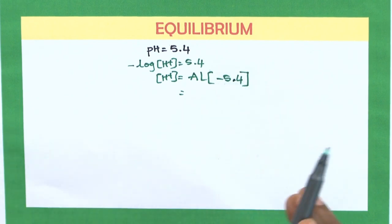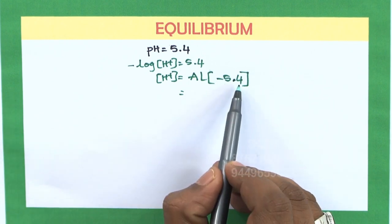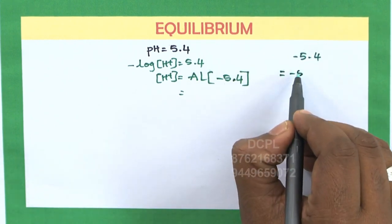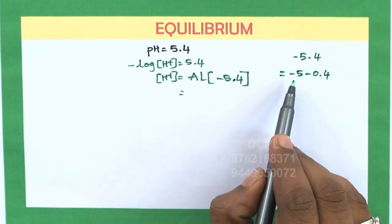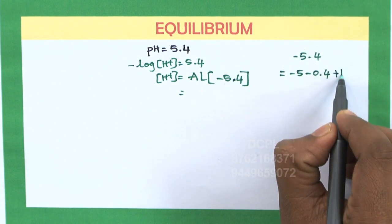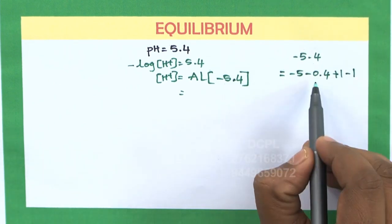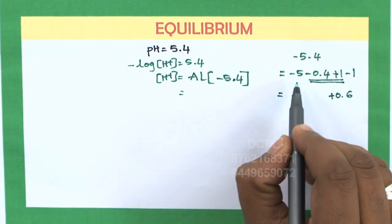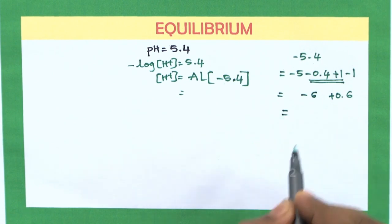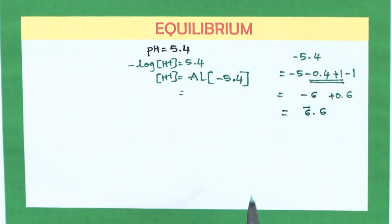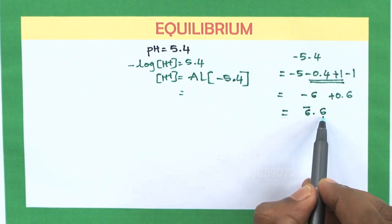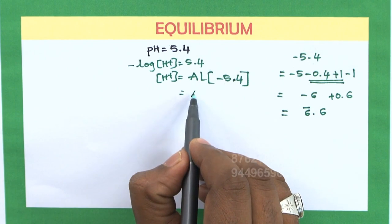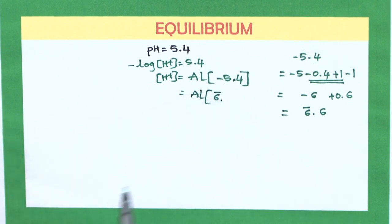The mantissa is the part present after the decimal point. To convert, rewrite −5.4 as −5 − 0.4. Adding and subtracting 1 gives: −5 − 0.4 + 1 − 1 = −6 + 0.6, written as 6̄.0.6 (bar 6 point 0.6). This means the characteristic is −6 and the mantissa is +0.6. So anti-log(−5.4) = anti-log(6̄.0.6), which gives us a positive mantissa we can work with.